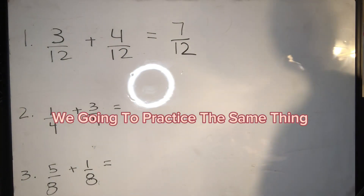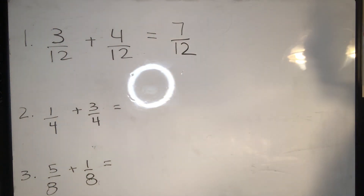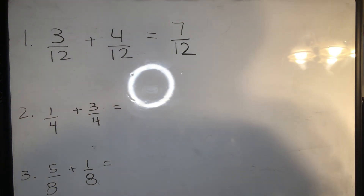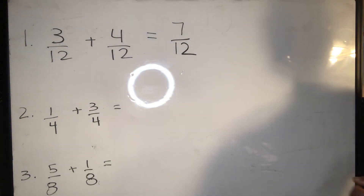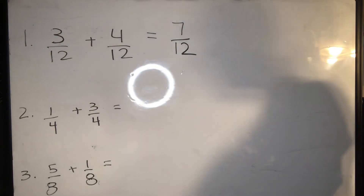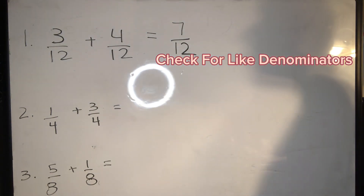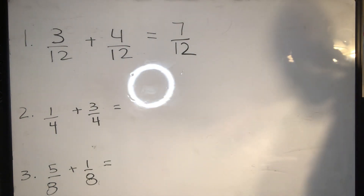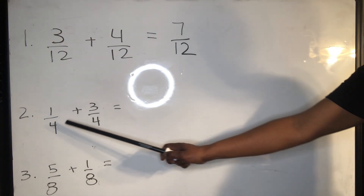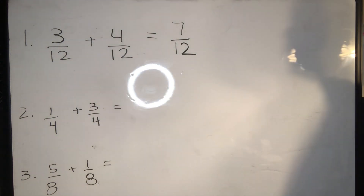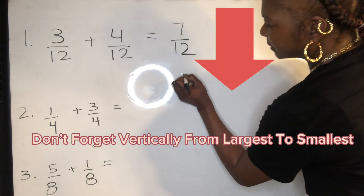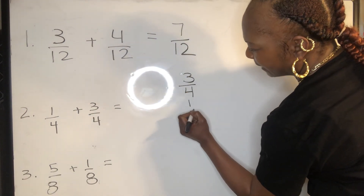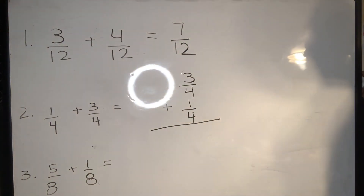Our answer on top is seven, and that makes our fraction now seven-twelfths. For problem number two, we have one-fourth and three-fourths. Again, most of your tests that you see will be written like this, and I just feel that on your scrap paper it is definitely okay for you to rearrange it. In my opinion, writing it vertically would be the best way to do that. We're going to decide — we already see that our denominators are the same. Once they are the same, then we can go ahead and add. Before we add, we look at our numerators and decide, is one bigger than three? No. Three is our bigger number.